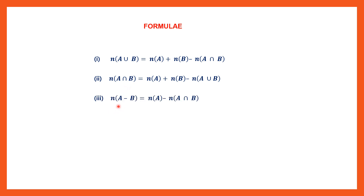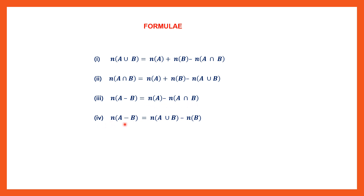If you have to find the difference A minus B — that is, the cardinal number of A minus B — this is the formula when A intersection B is given. If you have to find A minus B when A union B is given, this is the formula. Why are these two formulas different though both are for the same purpose? Because here it is intersection and here it is union.